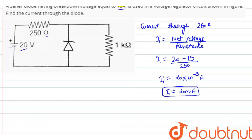Now, current through 1 kilo ohm resistor. So, I2 becomes 15 volts upon 1 kilo ohm. That is breakdown voltage upon resistance value.